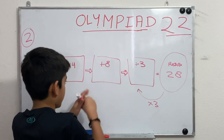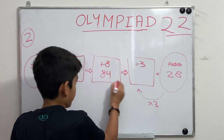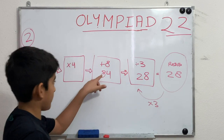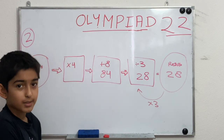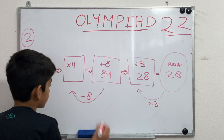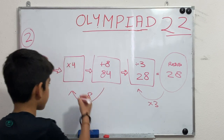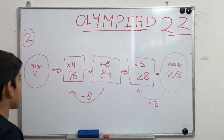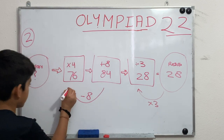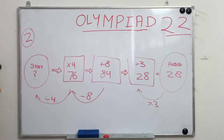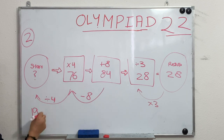Now working further back — we added 8, so we subtract 8 from 84 to get 76. Before that, we multiplied by 4, so we divide 76 by 4 and get 19. So the starting number is 19, which is our answer.